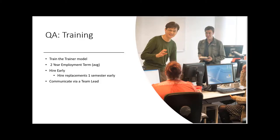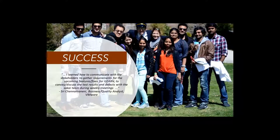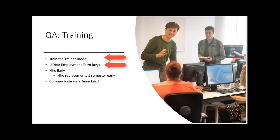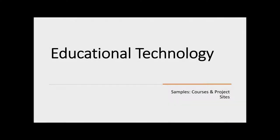Quality Assurance Training is based on a train-a-trainer model where senior students train those who come after them. Many of our students are international graduate students who will only be with the institution for two years. It is recommended to hire early to allow for knowledge transfer from graduating students to the next generation. There is almost always one student who shines at taking the lead, and although there is a budget limit so no promotions, we do offer title changes. The model consists of a train-a-trainer approach, a two-year employment term, early hiring, and communication via a team lead.